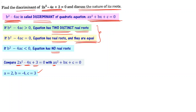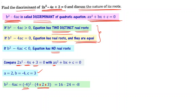b² minus 4ac equals minus 4 whole square minus 4 times 2 times 3. This is 16 minus 24, which equals minus 8. The value of b² minus 4ac is minus 8, which is a negative number — it is less than 0.